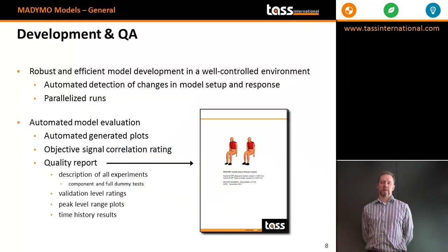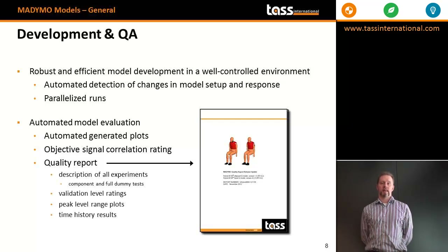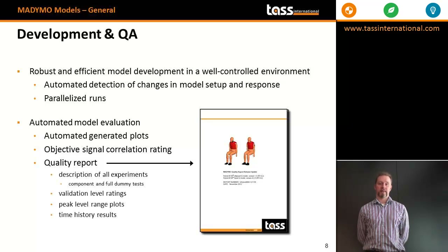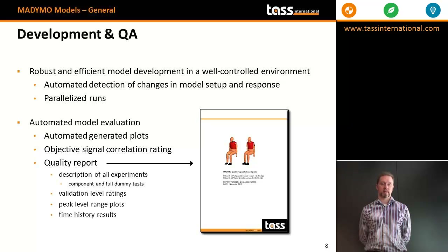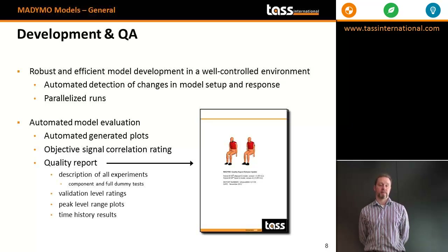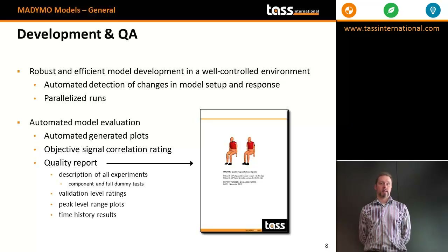Our database has been developed with a robust and efficient model development process within a well-controlled environment in which we automatically detect changes in the model setup and the response. We can parallelize runs and automate the model evaluation. We get automatic plots of all dummy signals against experimental data and previous dummy versions. We also develop an objective signal correlation rating system, and for our main dummy models we provide quality reports with all validation experiments, validation level ratings, range plots for publicly available test data, and time history results.